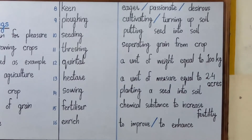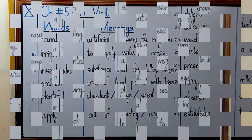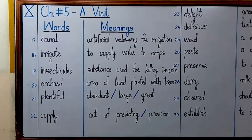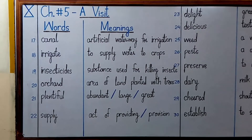Number sixteen is 'enrich'. This is a verb and it means to improve or to enhance. Number seventeen is 'canal', which means an artificial waterway for irrigation. Number eighteen is 'irrigate', which means to supply water to crops.